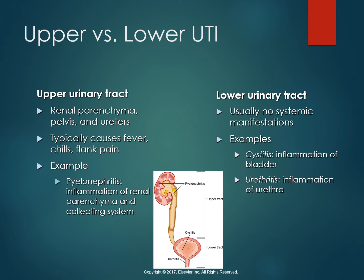There's a picture here of our urinary tract. Our upper urinary tract includes the kidney, the ureters, the renal parenchyma, and the renal pelvis. When we have an upper urinary tract infection, this usually causes fever, flank pain, and chills — those are very characteristic of upper UTI. We'll look more at that when we look at pyelonephritis, which is an inflammation of the renal parenchyma and the collecting system in the ducts.